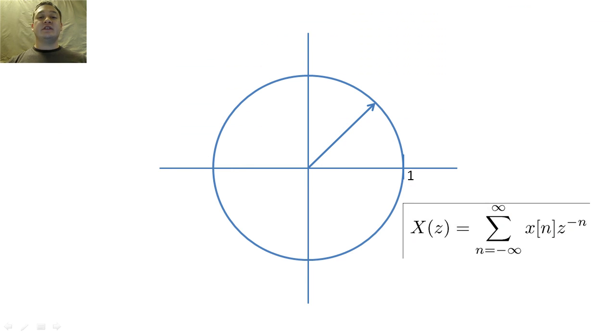We have previously learned that if a digital filter's region of convergence includes the unit circle, then the filter will be BIBO stable.